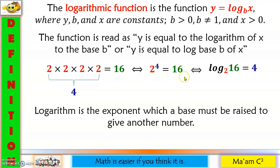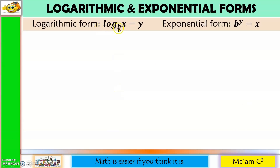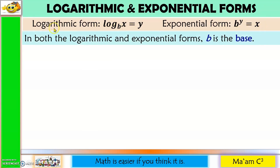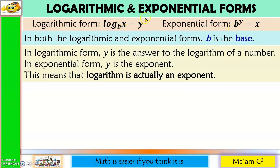You notice that there is a relationship between exponential and logarithmic form. They are actually inverses of one another. This is the logarithmic form, while this is the exponential form. In both forms, b is your base. In the logarithmic form, y is the answer. In exponential form, y is the exponent. This means that the logarithm is actually an exponent.